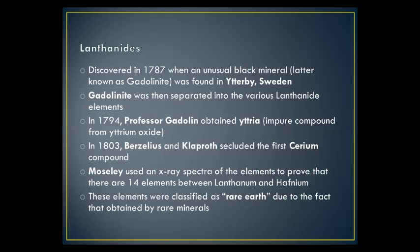The lanthanides were first discovered in 1787, when an unusual black mineral was found in Ederby, Sweden. This mineral, now known as gadolinite, was later separated into the various lanthanide elements. In 1794, Professor Gadolin obtained yttria, an impure form of yttrium oxide, from the mineral. In 1803, Berzelius and Klaproth isolated the first cerium compound.